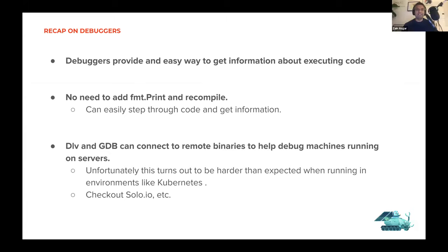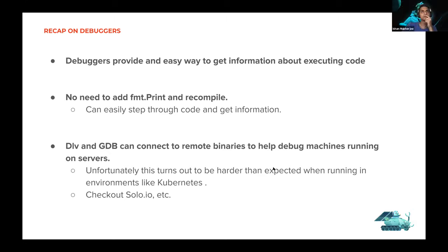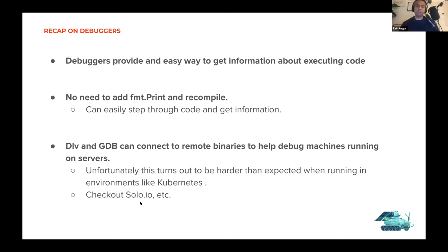What's great about debuggers: they provide an easy way to get information about code that's already running without having to recompile it — no need to add print statements. You can easily step through the code and get information, so it's super interactive. Furthermore, things like Delve and GDB can connect to remote binaries running on a different machine. Unfortunately, the process of actually connecting to remote binaries can be more challenging than it needs to be, but there are projects like solo.io that make this process much more manageable.